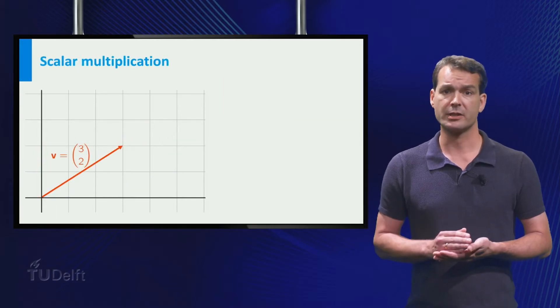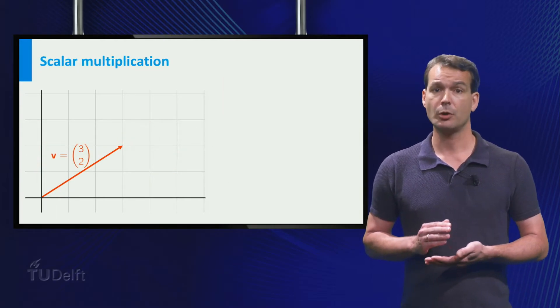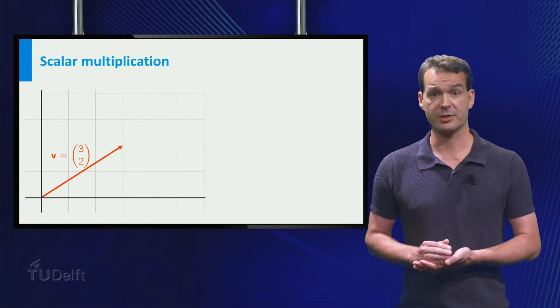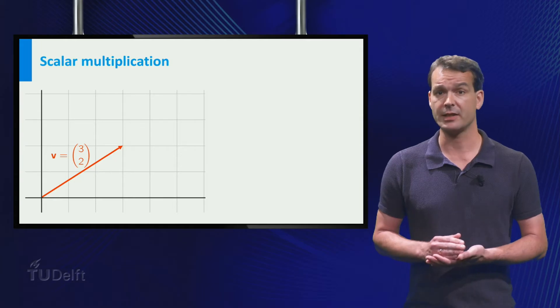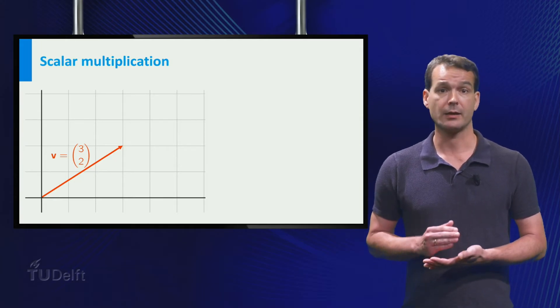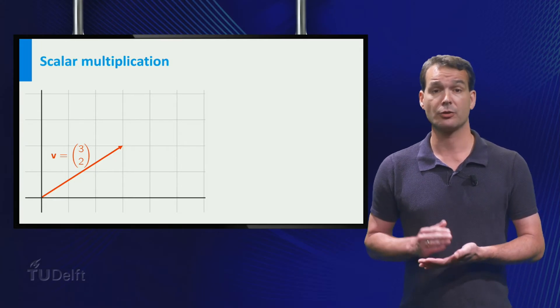Now consider scalar multiplication. If you multiply a vector with a positive scalar k, the resulting vector has the same direction as the original vector and the length is k times the original length.